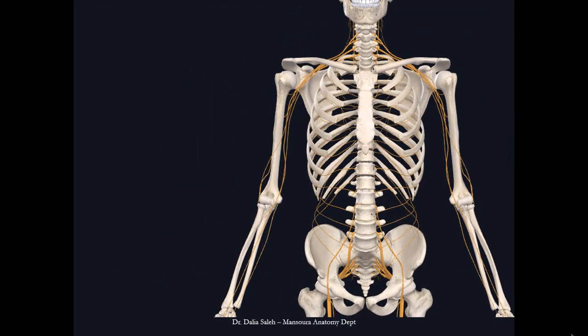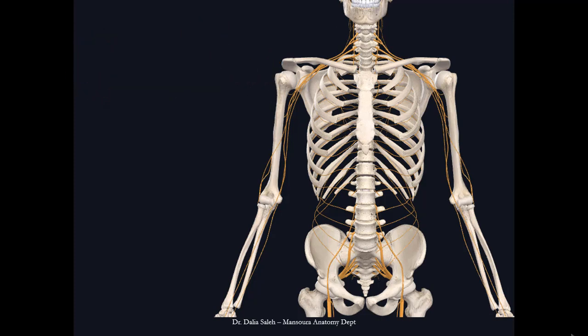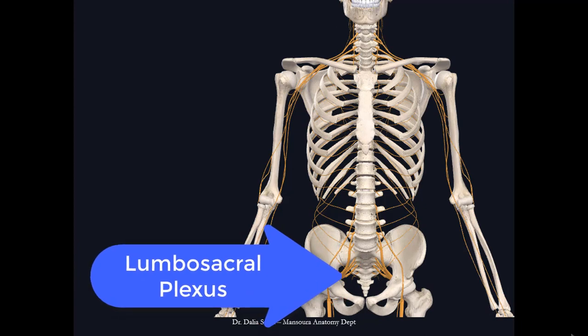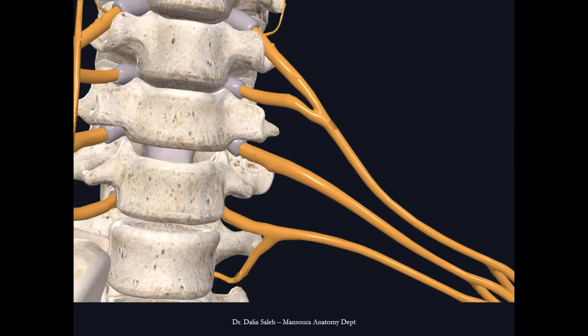At the root of the upper and lower limbs, the spinal nerves exchange their fibers and form a network. From this network, the nerves of the limb arise. At the root of the upper limb we have what's called the brachial plexus. The word 'brachium' means arm and 'plexus' means network, so the brachial plexus is the network that gives rise to the nerves supplying the upper limb.